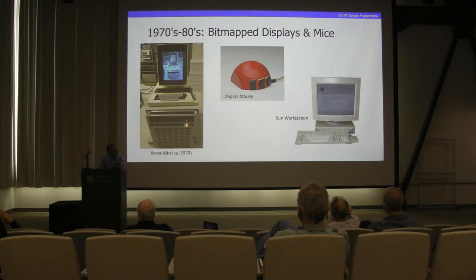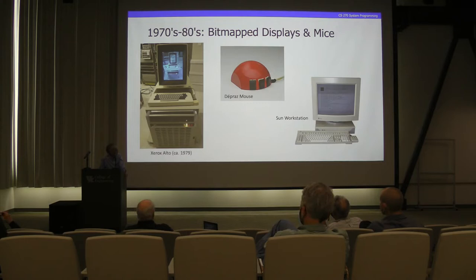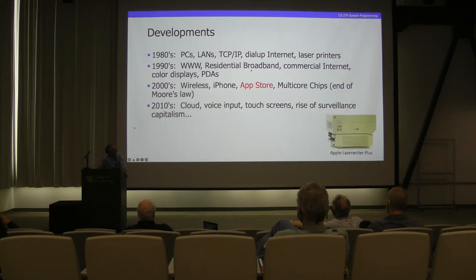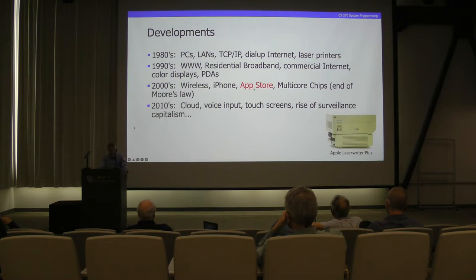It had a line printer, matrix printer. Then in the 80s we got bitmap displays — this is the Xerox Alto. They were just coming in around 1979. Then there was a mouse. Bell Labs had a good map terminal. Then we got some workstations. Of course the internet came along — TCP/IP in the early 80s. I printed my dissertation on an Apple LaserWriter. The World Wide Web became a thing in the 90s. Broadband came to your home. And then we got maybe the most influential development of the last 30 years — in my opinion — the app store.